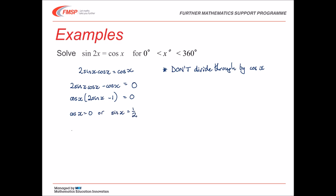And that gives me that x is 90 degrees, or 270 degrees, from cos x equals 0. Or 30 degrees, or 150 degrees, from sin x being equal to a half.